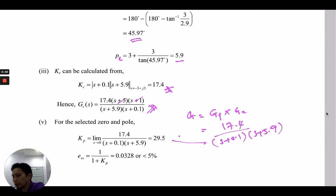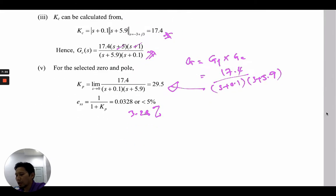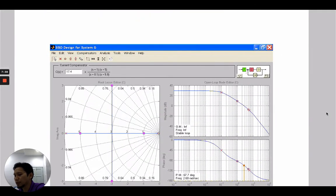We can find KP since the test signal is a step input. We find the static error constant for position using the final value theorem as we learned in the steady-state error lecture. We find the value of KP equals 29.5, and we can then calculate the steady-state error by taking 1 over 1+KP, which equals 3.28%, which is less than 5%. The next thing to do is we can plot it using MATLAB.